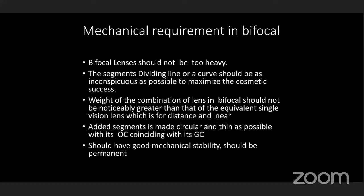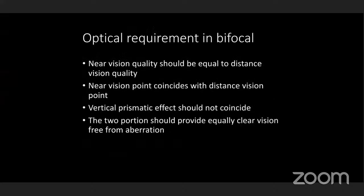Now we look at the mechanical requirements for bifocal lenses: the lenses should not be too heavy; the segment dividing line or curve should be as inconspicuous as possible; the weight of the bifocal combination should not be noticeably greater than that of the equivalent single vision lens. The segment should be made as circular and thin as possible, with its optical center coinciding with its geometric center, and should have good mechanical stability and be permanent. For optical requirements: near vision quality should equal distance vision quality; near and distance vision points should coincide; vertical prismatic effect should not conflict; and the reading portion should provide equally clear vision, free from aberration.